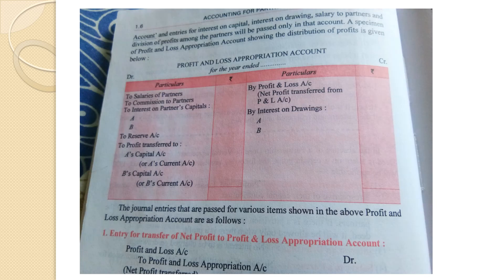This is the format of profit and loss appropriation account. On the debit side we have salary to partners, commission to partners, interest on partners' capital, reserves, and profit transferred to partners A or B. On the credit side we have the net profit from the profit and loss account, and if there is any drawing by a partner, the interest on drawings should be mentioned on the credit side of the P&L appropriation account.